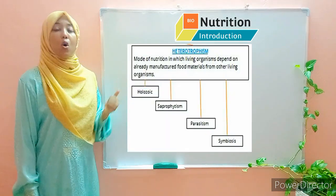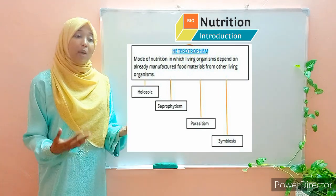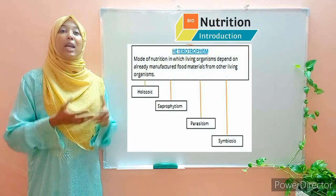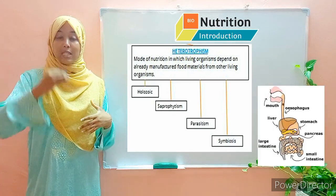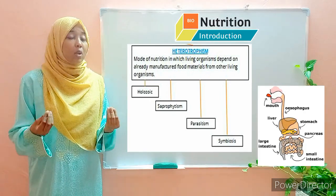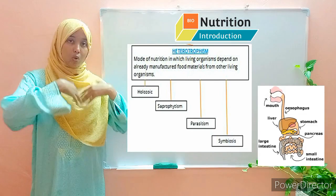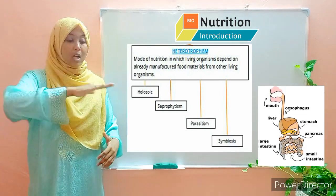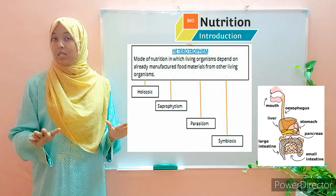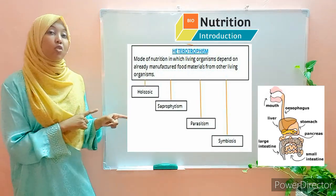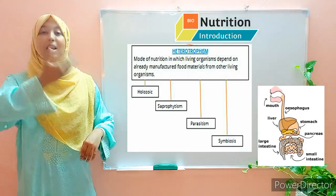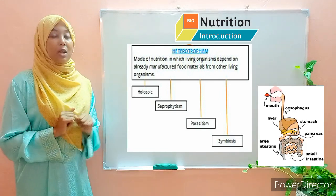Holozoic is a mode of nutrition whereby organisms like mammals and birds ingest solid food substances. The solid food is then digested — broken down — and the body assimilates and uses the nutrients for various processes. So holozoic involves solid food substances being ingested, digested, and then assimilated. Examples include mammals and birds.